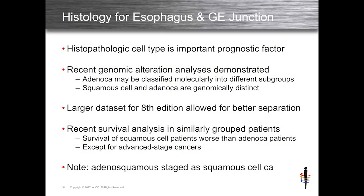Histologic cell type is an important prognostic factor. We have the TCGA genome project showing they are genomically distinct with different prognosis, so it made sense to separate squamous and adenocarcinoma. We used the larger 8th edition WECC data to validate better separation between staging classification systems. Grouped patients with squamous do worse than adeno, except for some advanced cancers where they converge. And as a rule: if it's an adenosquamous tumor, it's staged as squamous.